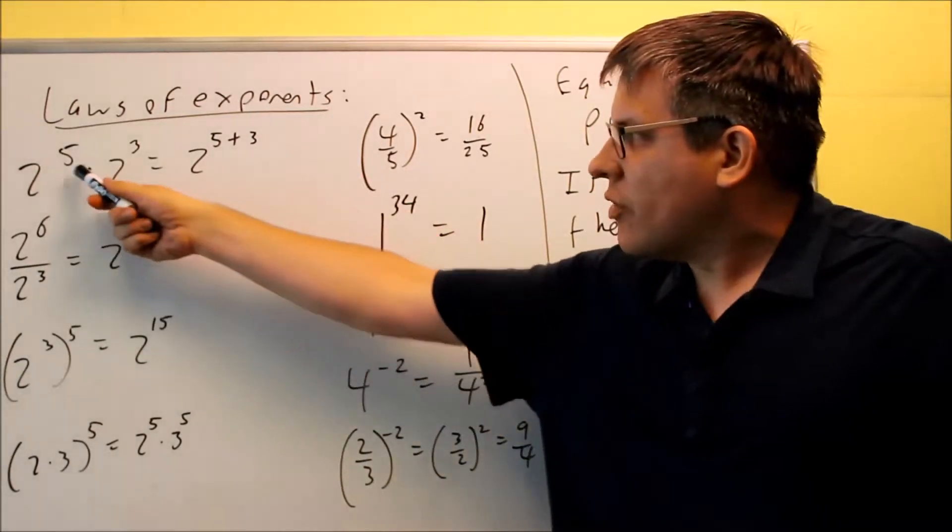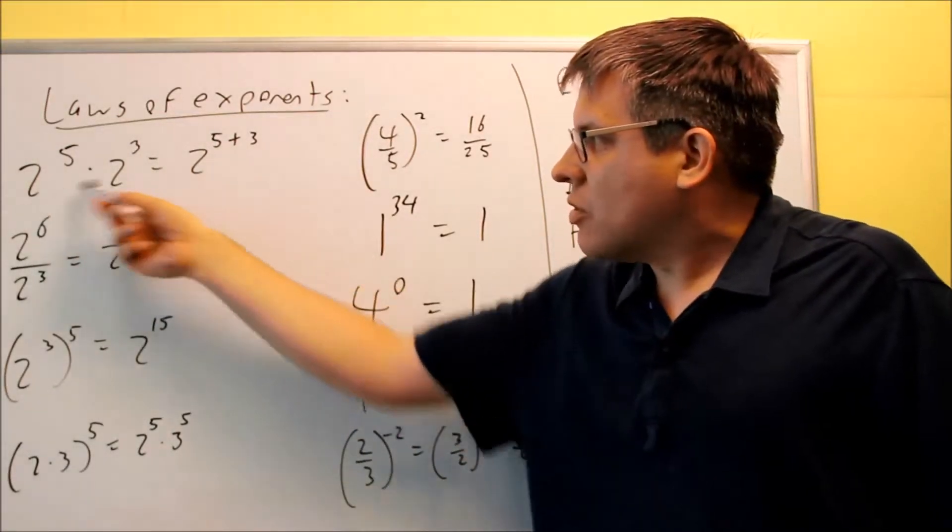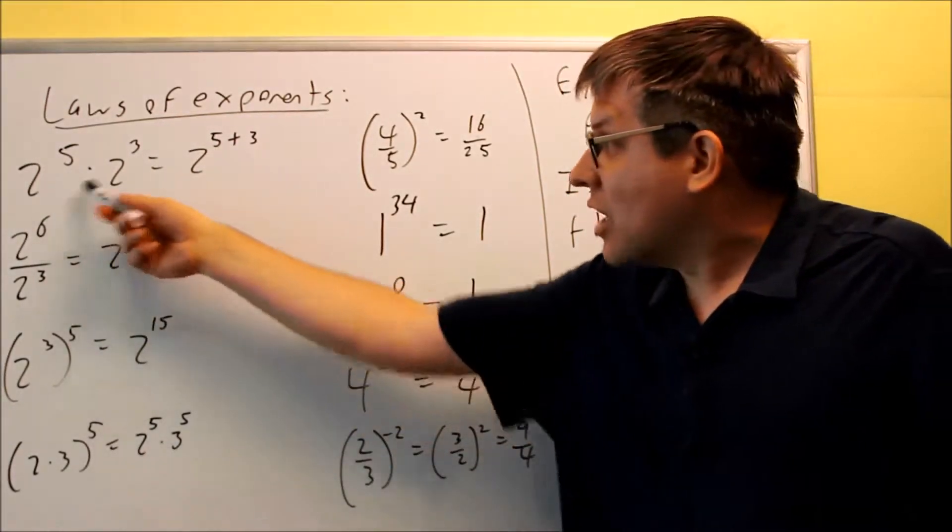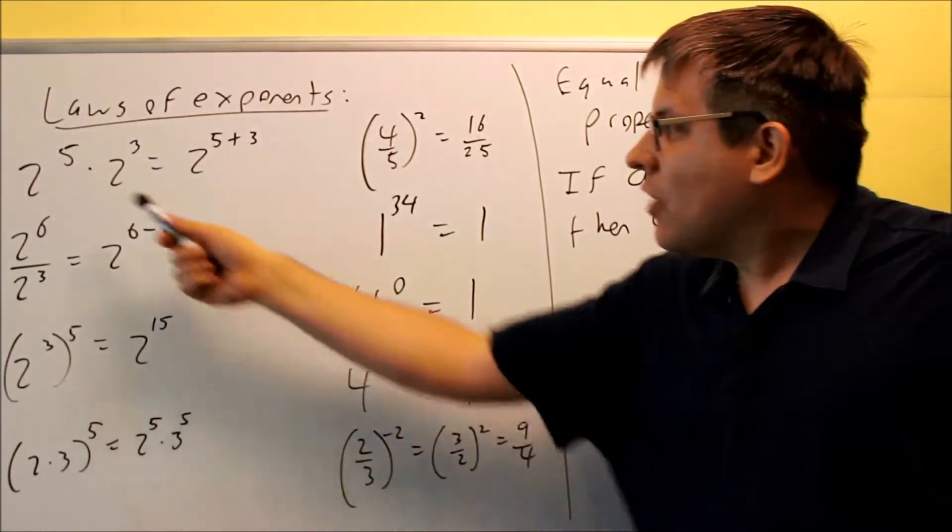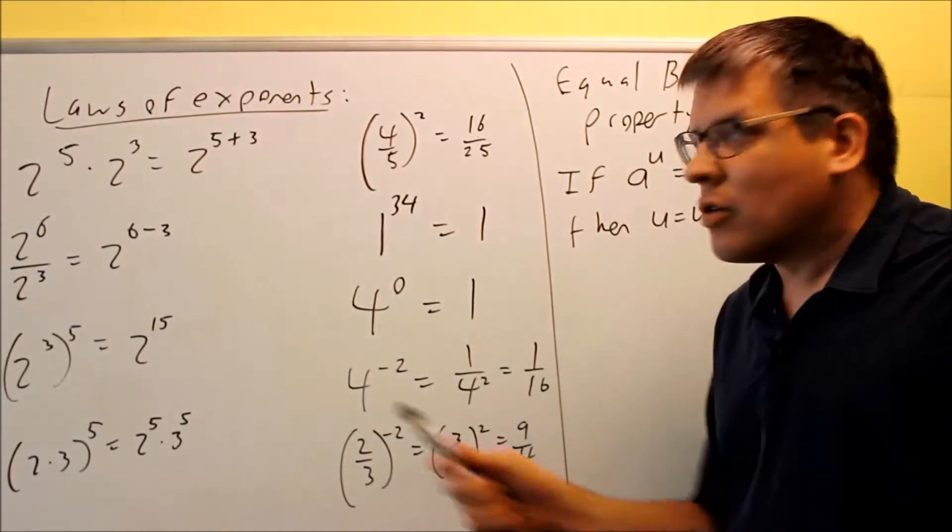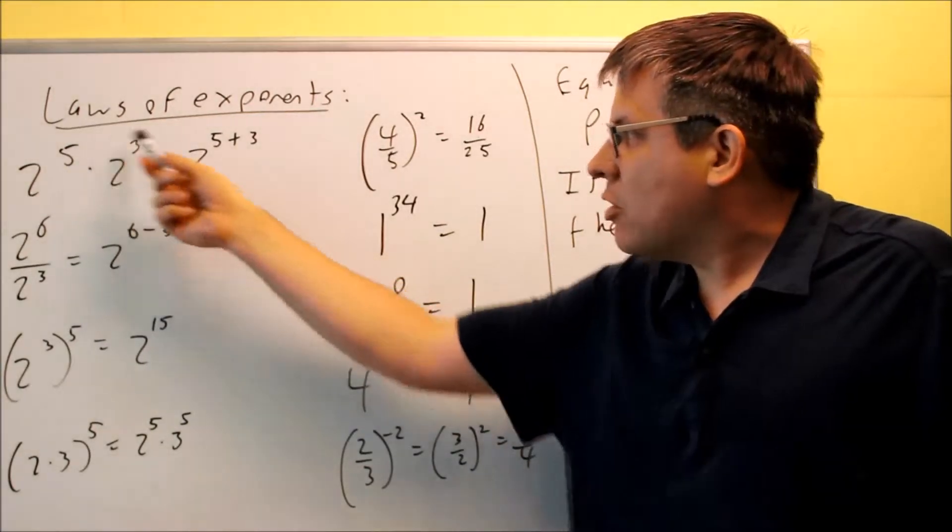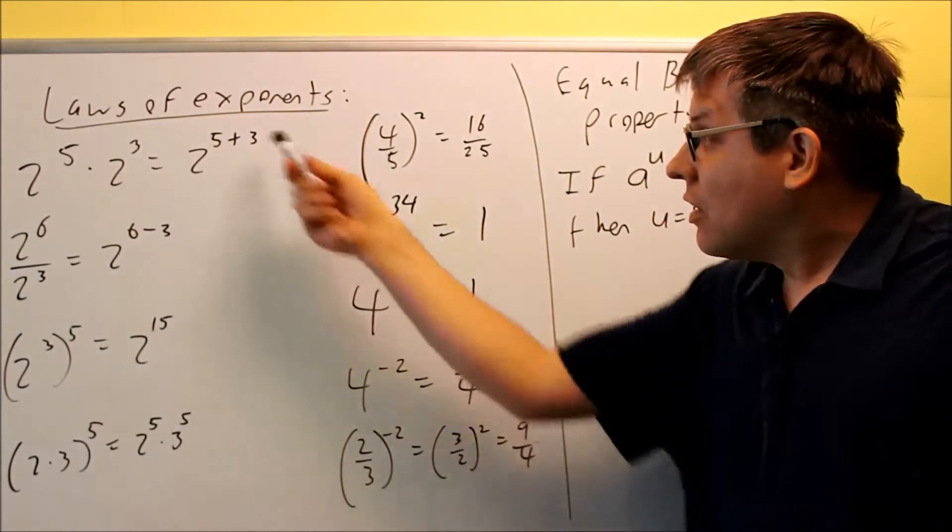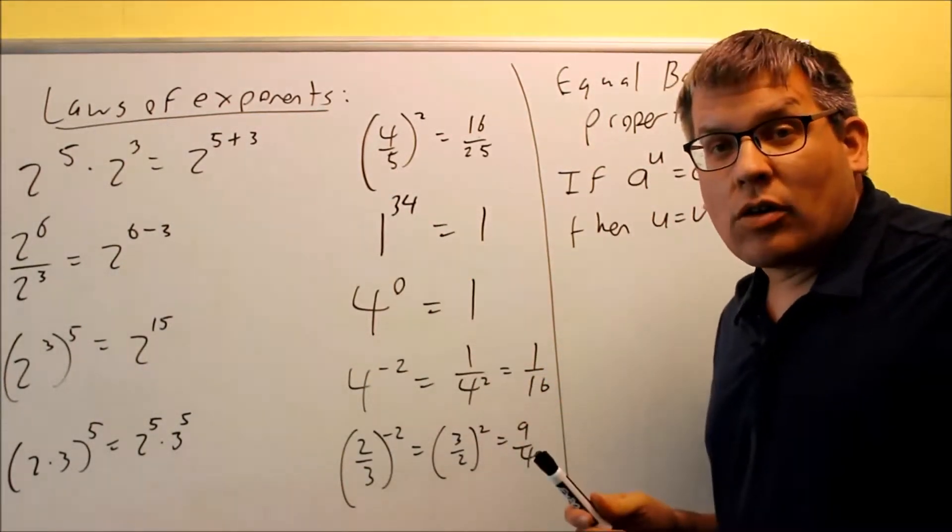First of all, the first rule says that if you've got the same base - it's very important that you have exactly the same base here - if you multiply these two, then what you're doing is you're adding the exponents together. So the base is the same and you're just taking 5 plus 3, and that's going to give you 2 to the 8th power. That's the first rule.